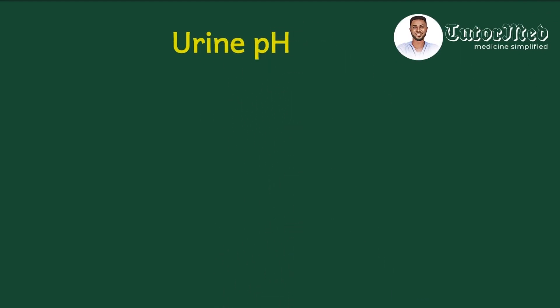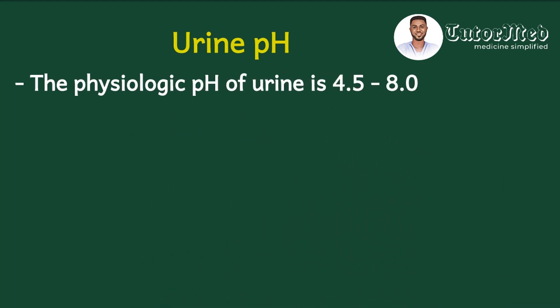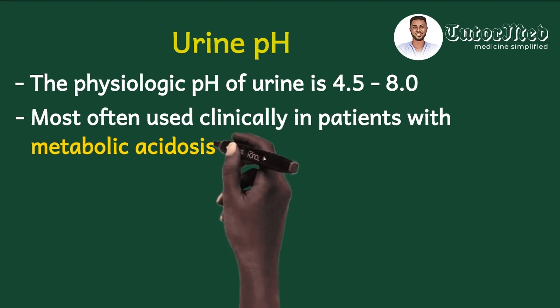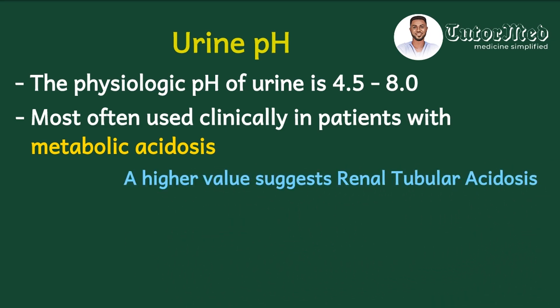The next parameter is urine pH. The kidneys are one of the organs that maintain normal acid-base balance, alongside the lungs, by excreting acids into the urine when necessary. The physiologic pH of urine is 4.5 to 8.0. Urine pH is most often used clinically in patients with metabolic acidosis — for instance, a patient with type 1 diabetes mellitus who has developed diabetic ketoacidosis. Because of the acidosis in the blood, the kidneys excrete more hydrogen into the urine, thereby lowering the urine pH. A higher urine pH may suggest renal tubular acidosis, where the renal tubules fail to excrete hydrogen ions because they are damaged.